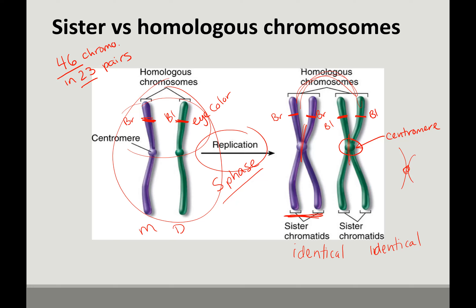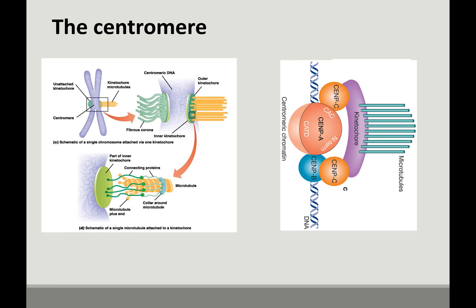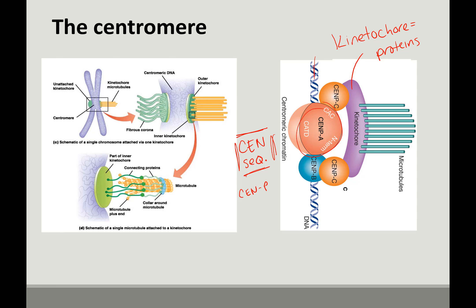Sister chromatids are held together by a little knot called the centromere — that's why they look like an X when drawn held together. The centromere is made up of a bunch of proteins called the kinetochore. On the chromosome you have centromeric sequences, or CEN sequences. Your AGCT sequence is very specific and binds a CEN-P protein, which helps assemble this whole kinetochore protein complex that we see as the centromere.